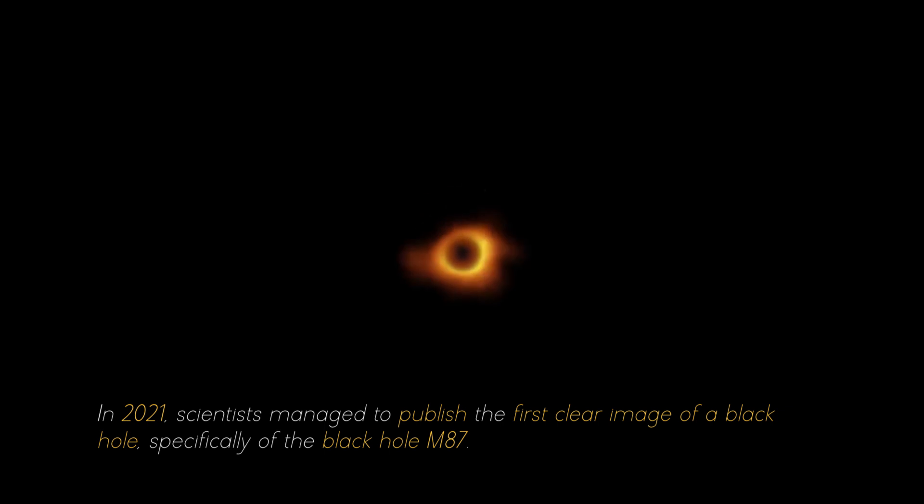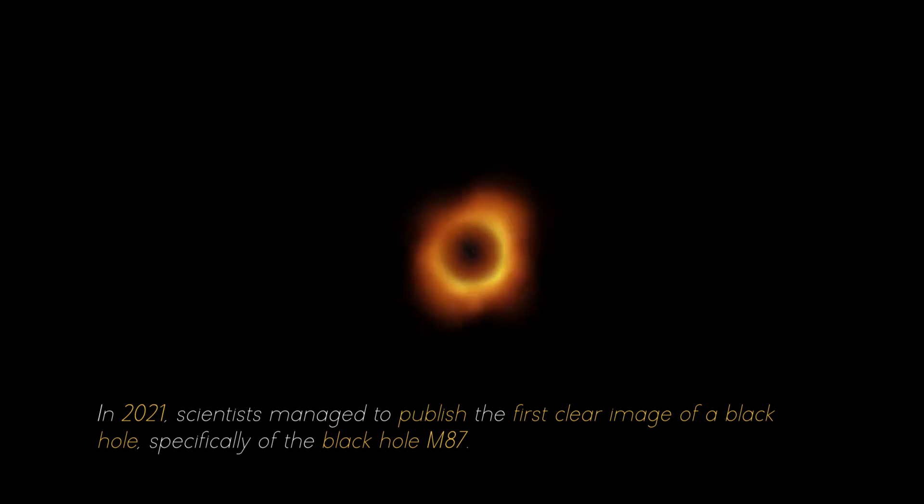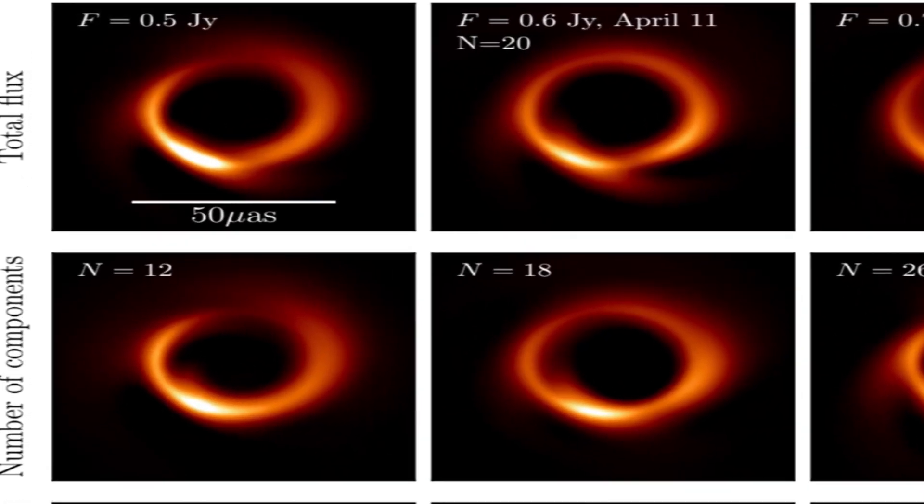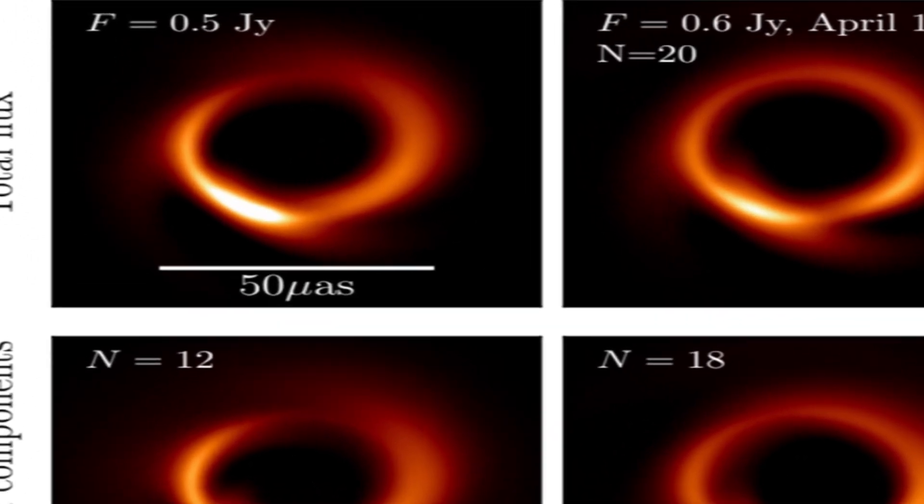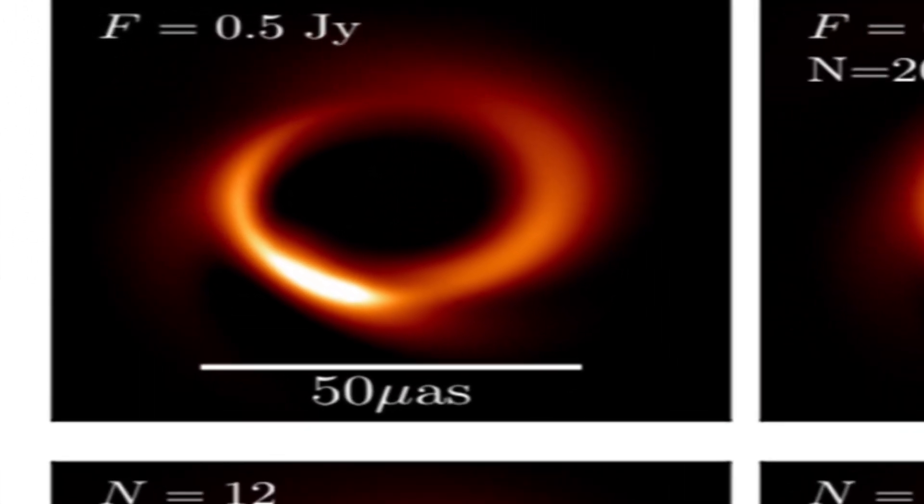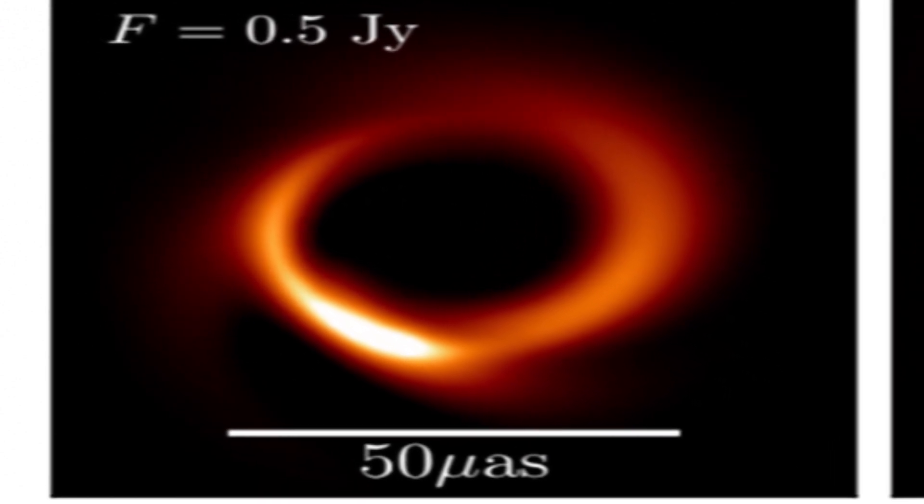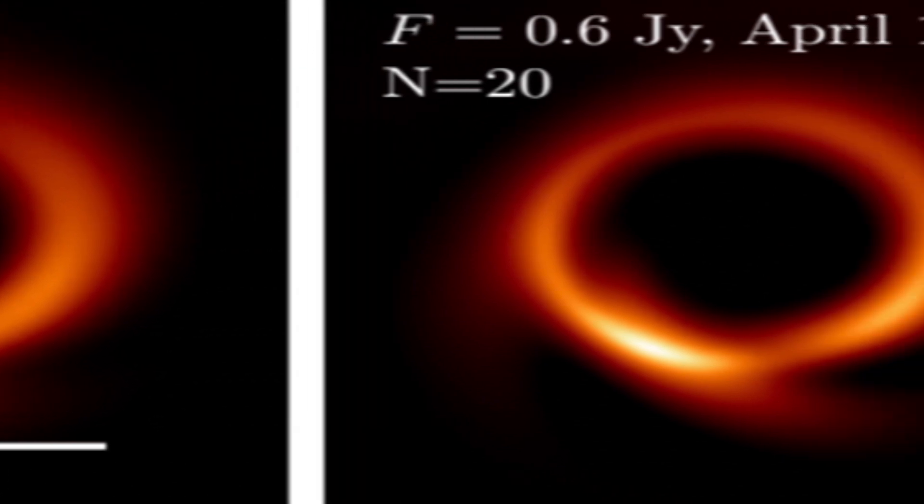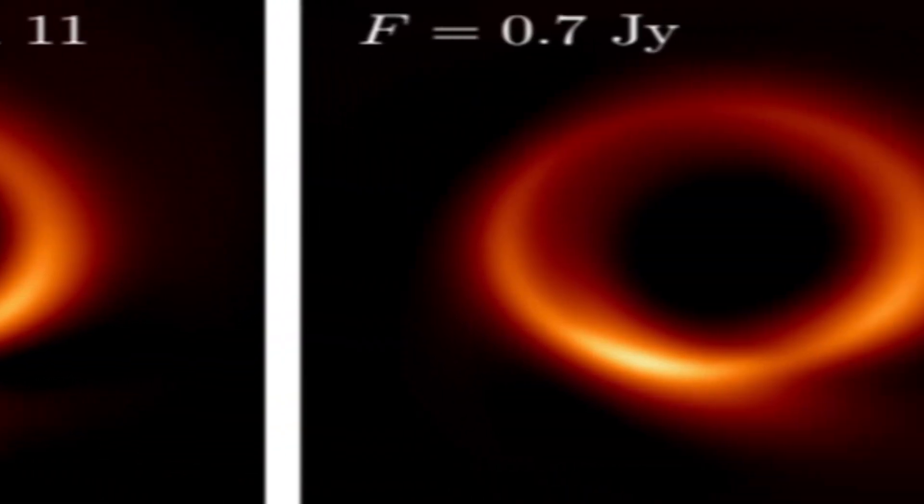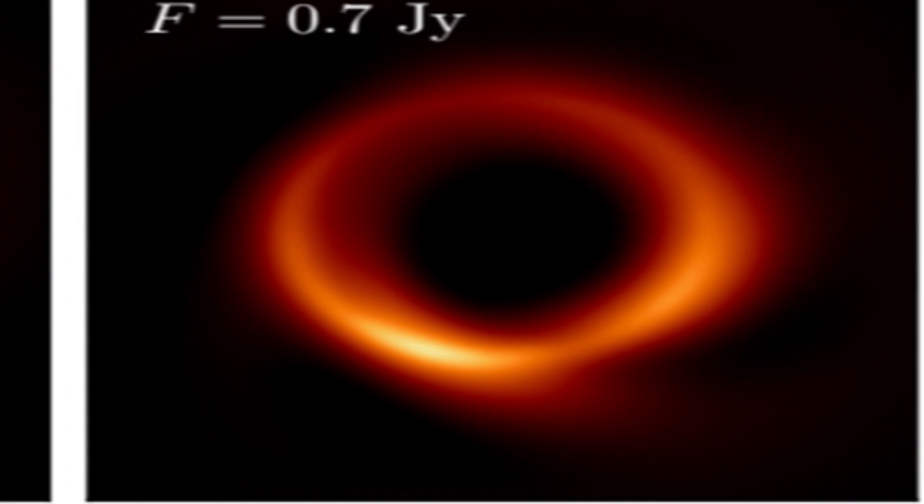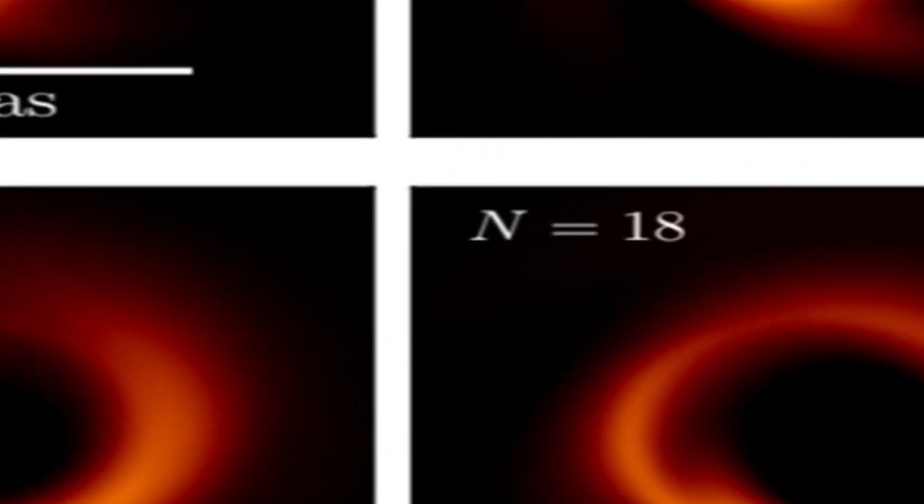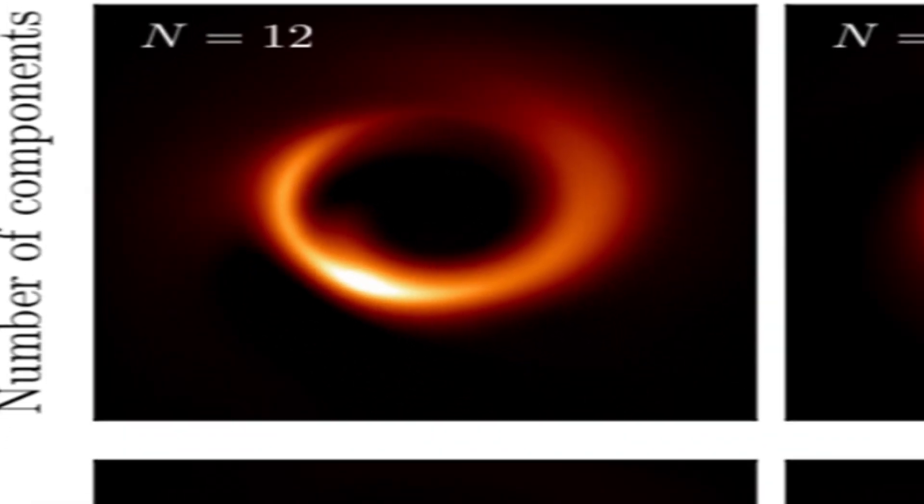In 2021, scientists managed to publish the first clear image of a black hole, specifically of the black hole M87. For several consecutive nights, photographs of the black hole were taken, and with each image researchers collected more evidence about it. It was necessary to combine the individual photographs to obtain a complete image that filled in all the gaps. In this way, the scientists discovered that black holes are not just simply an empty hole in the void, as many people believed.